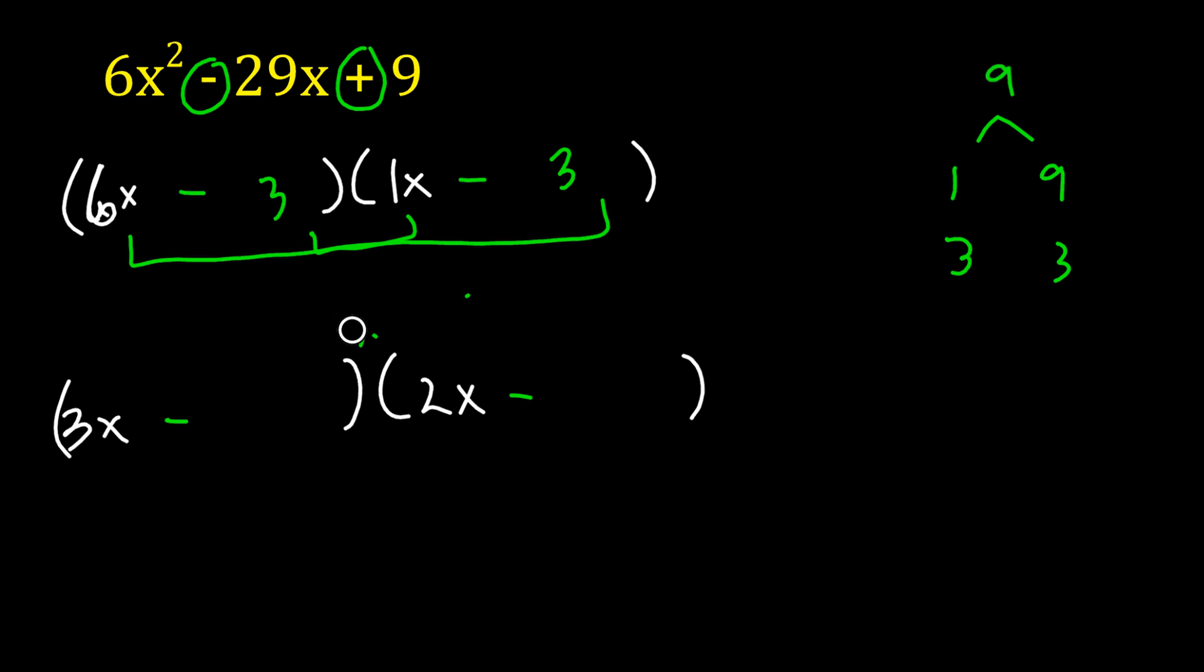6x times 3 would be 18x. And 3 times 1 is 3x. That gives me 21x. So that's not negative 29x. So it's not 6x and 1x. It's got to be 3x and 2x.